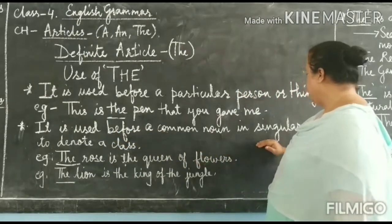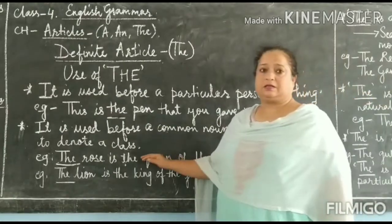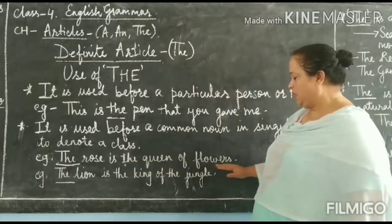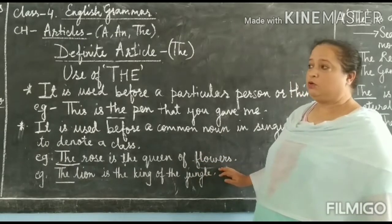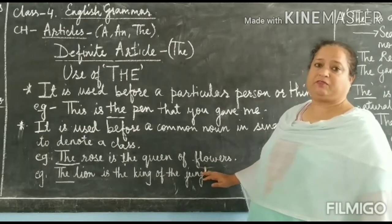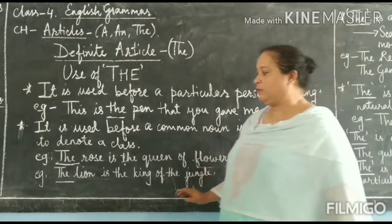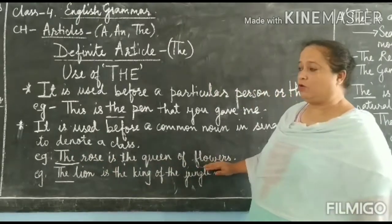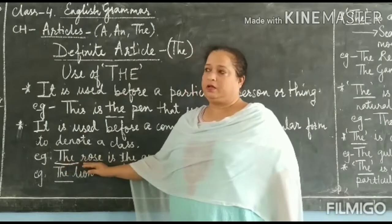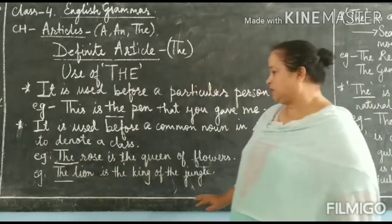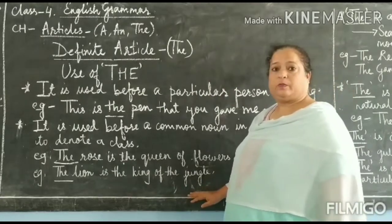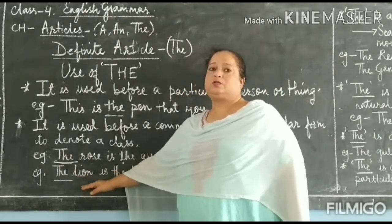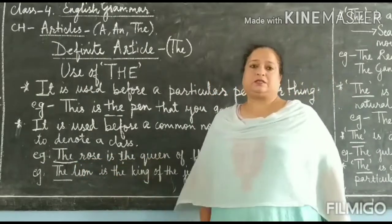The second use: 'the' is used before a common noun to denote a class or group. For example, 'The rose is the queen of flowers.' Here we are talking about flowers in general, but we refer to one particular flower — the rose — out of all flowers. Similarly, 'The lion is the king of the jungle.' We are talking about animals in the jungle, but we specify one: the lion. So when we talk about something specific within a general group, we use the article 'the'.